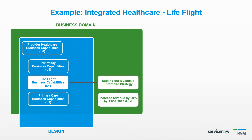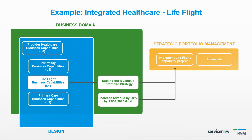In the green box, we can see that one of our enterprise strategies is to expand our business with a goal of 20% increase in revenue by the end of 2023. Building or buying a lifelight capability may be a good move for us. We can track this with an idea that turns into a demand, and then when we decide to execute, we can turn that into a project.